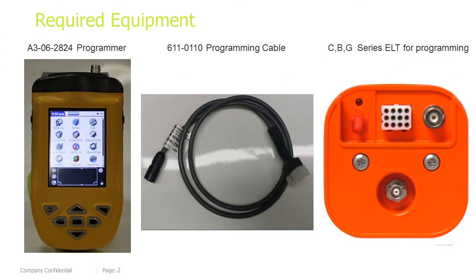Required Equipment. You'll need a programmer, part number A3-06-2824, a programming cable, part number 611-0110, and a C, B, or G series ELT for programming.